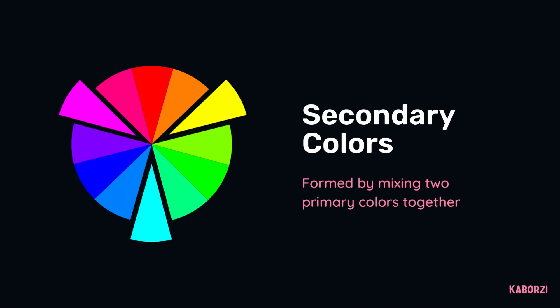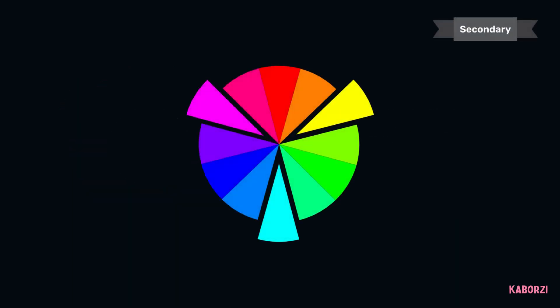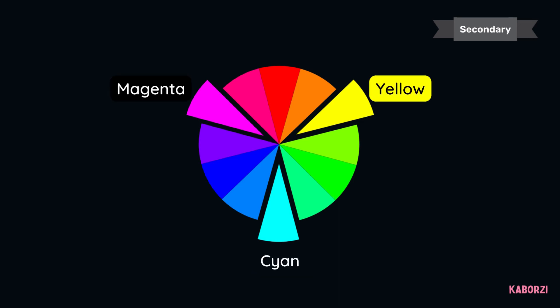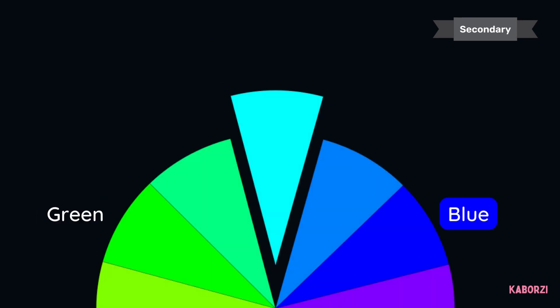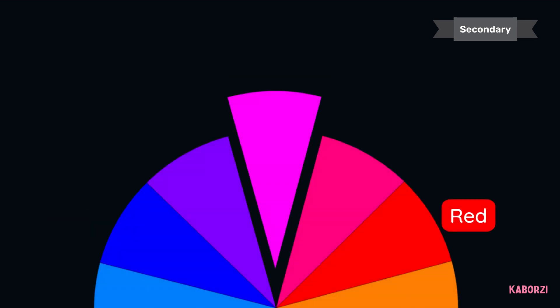Secondary colors are formed by mixing two primary colors together. Again, there are three of them. In the RGB Wheel, the secondary colors are cyan, magenta, and yellow. When mixing light: red plus green equals yellow; green plus blue equals cyan; red plus blue equals magenta.